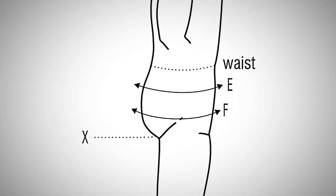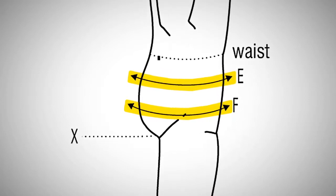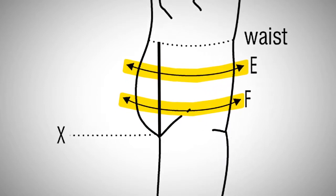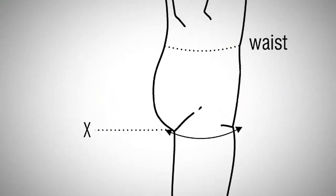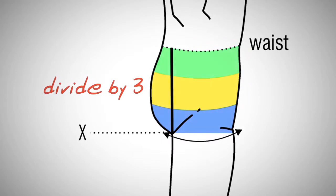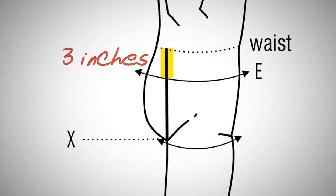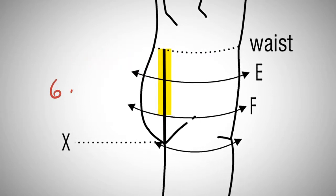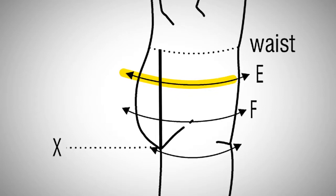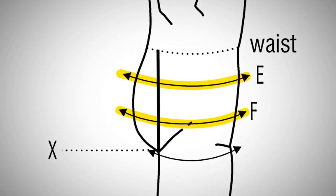Lower torso circumference measurements, capital E and capital F, are approximately evenly spaced between the capital D circumference or waist measurement and point X, the fold of the buttocks. Measure the space between the waist and point X and divide by three. Then make a mark on one of the posterior buttocks three inches below capital D, and again at six inches below capital D. Take your capital E circumference at the first mark, and your capital F circumference six inches below the waist.